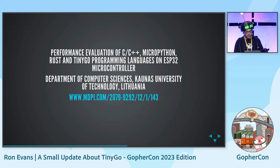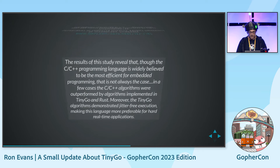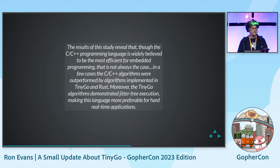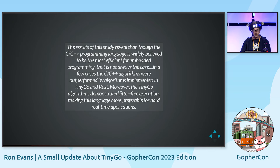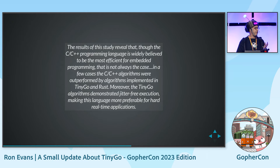A team of researchers at Kaunas University in Lithuania did an academic paper on the performance evaluation of C, C++, MicroPython, Rust, and TinyGo. The quote: 'The results reveal that though C and C++ are widely believed to be the most efficient for embedded programming, this is not always the case. In a few cases it's outperformed by TinyGo and Rust. Moreover, TinyGo algorithms demonstrated jitter-free execution, making this language more preferable for hard real-time applications.' You've heard it from the academics.